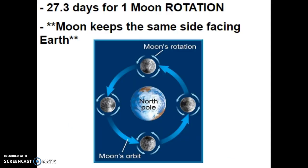Just like it takes 27.3 days for the Moon to go around the Earth, it also takes 27.3 days for the Moon to rotate once. So what this means is that we only see the same side of the Moon from Earth's surface all of the time, because it rotates at the same rate as it revolves.